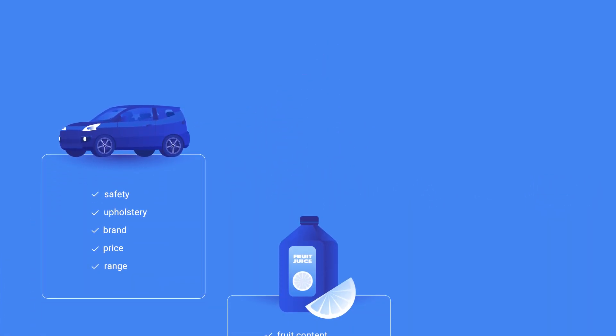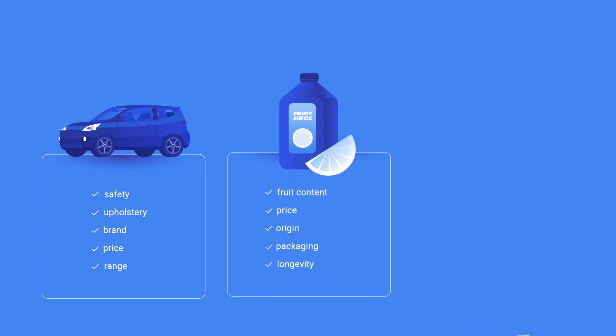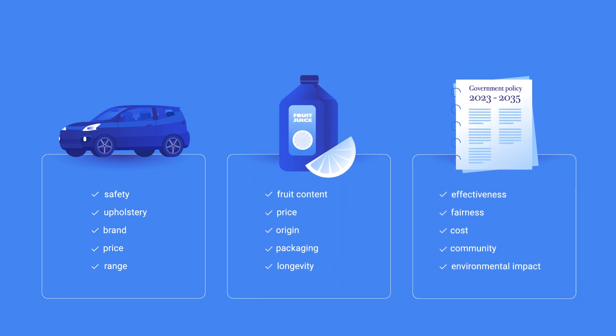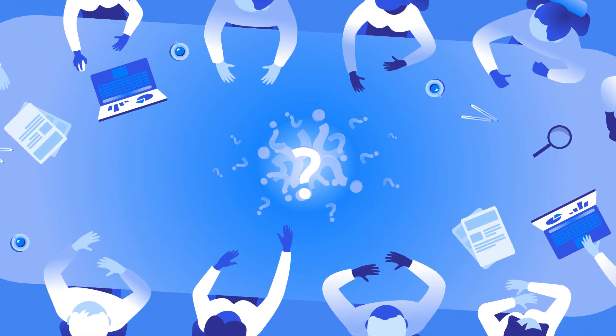Conjoint Analysis is a method for discovering how much people value the various attributes of a product or service, or other object of interest, such as a government policy. It is commonly used in market research to analyze consumer preferences, but you can use it for all sorts of research and planning purposes that involve trade-offs.